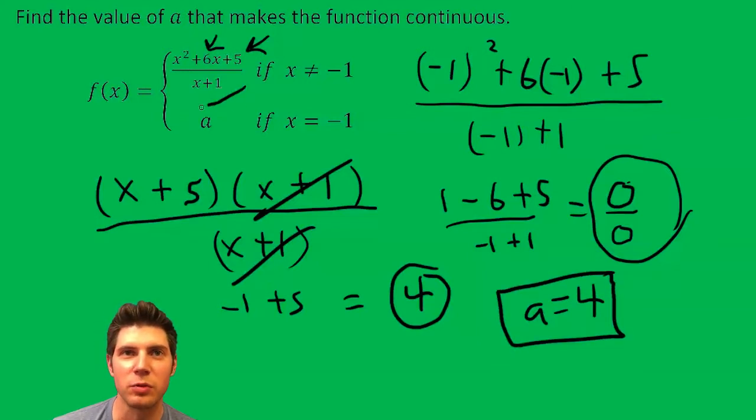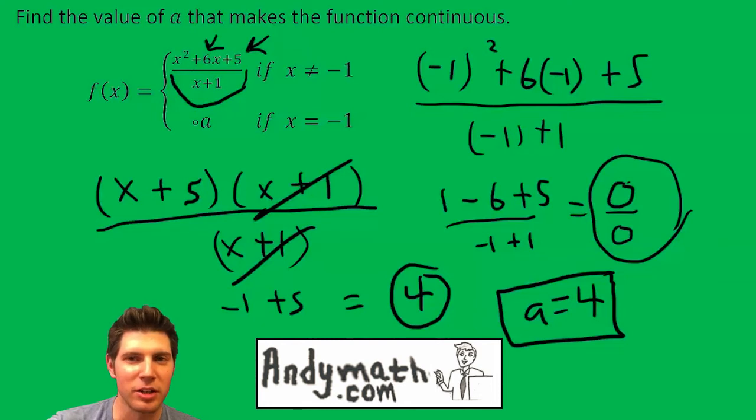Four is what this function would be if it was continuous, if it didn't have the zero over zero occur when we hit negative one. Check out andymath.com for more videos and please like and subscribe.